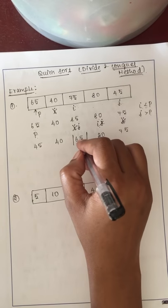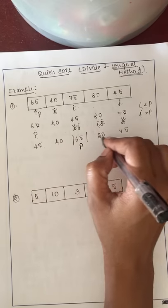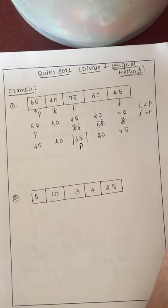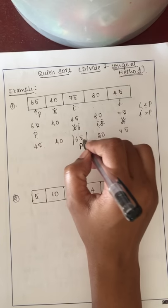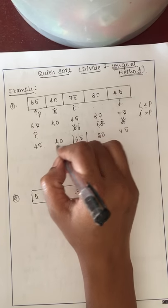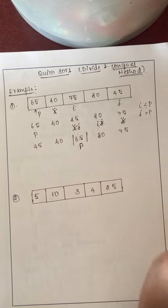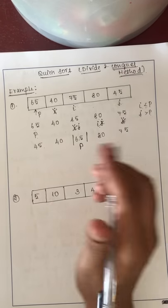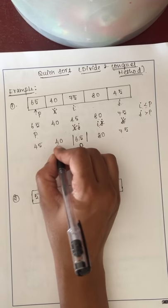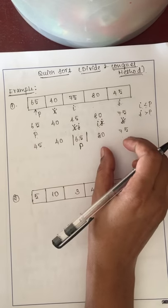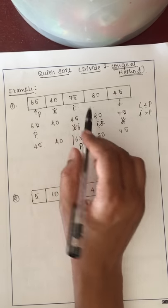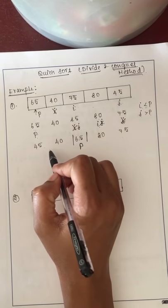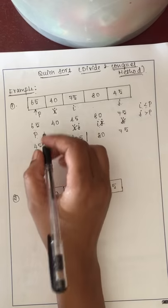Now the pivot element is in its correct position. The elements to the left of the pivot and the elements to the right will be treated as two different sub-arrays. We apply the same procedure again to each of these sub-arrays.